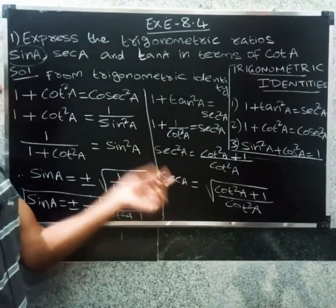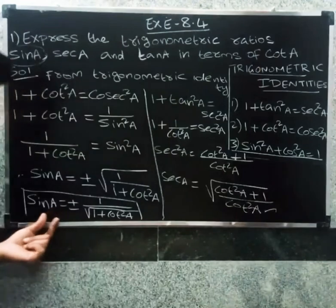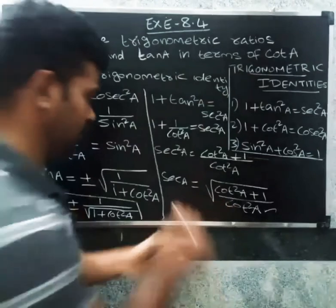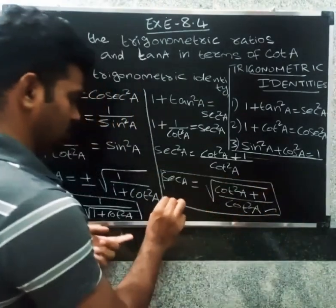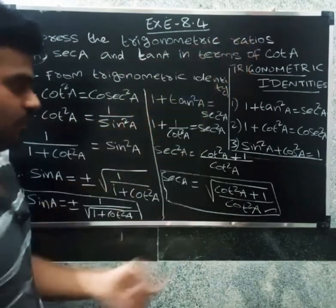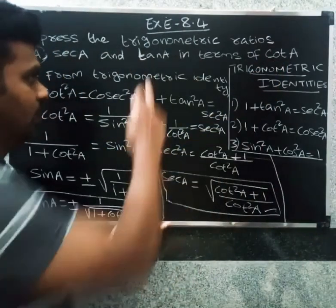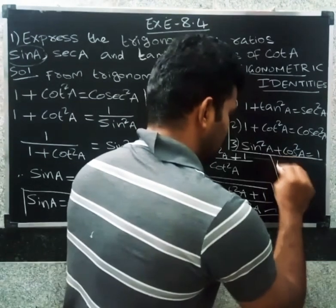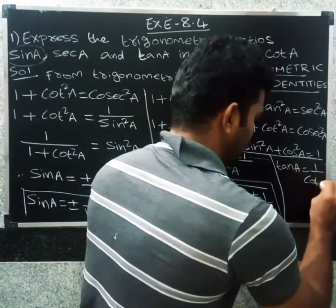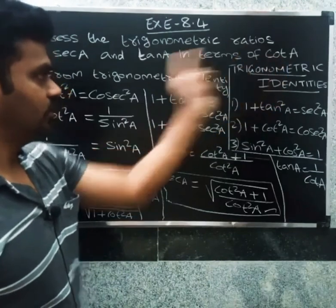So secant a in terms of cot a is derived. First: sine a in terms of cot a. Second: secant a in terms of cot a. Third: tan a in terms of cot a. Since tan is the inverse of cot, tan a in terms of cot a is simply one divided by cot a.